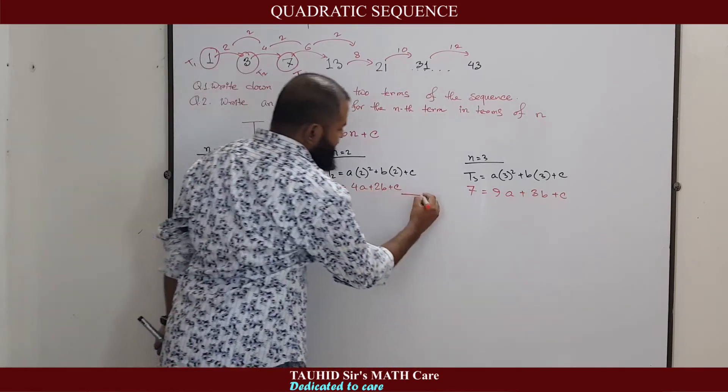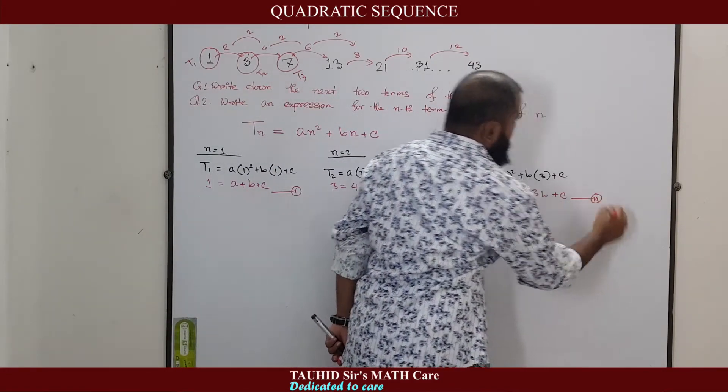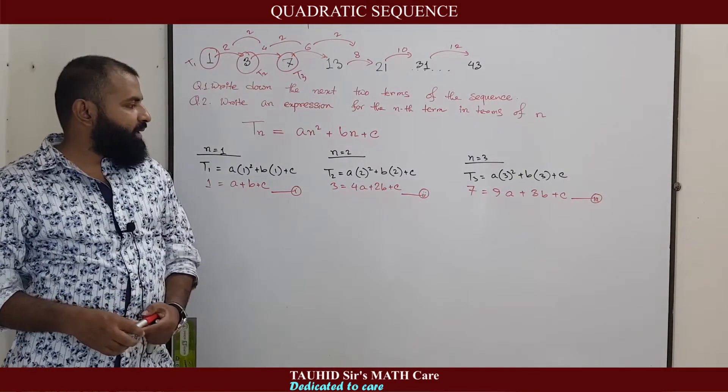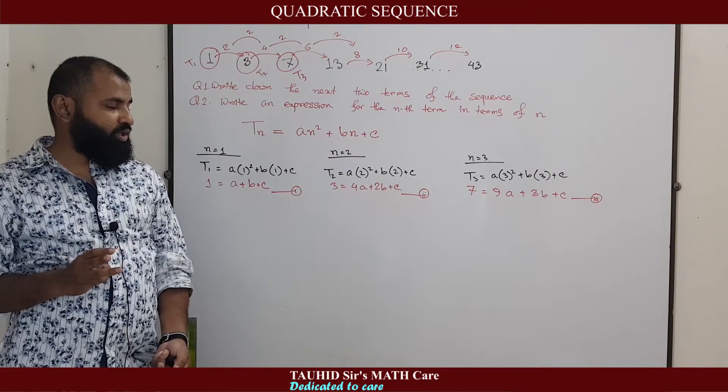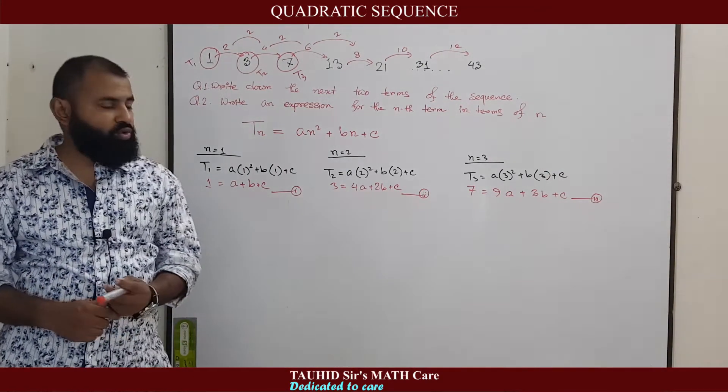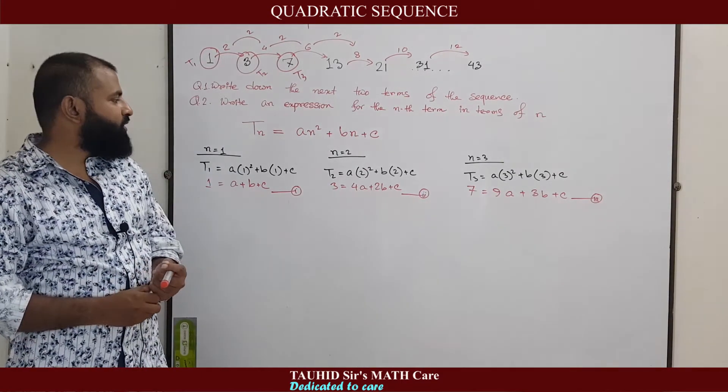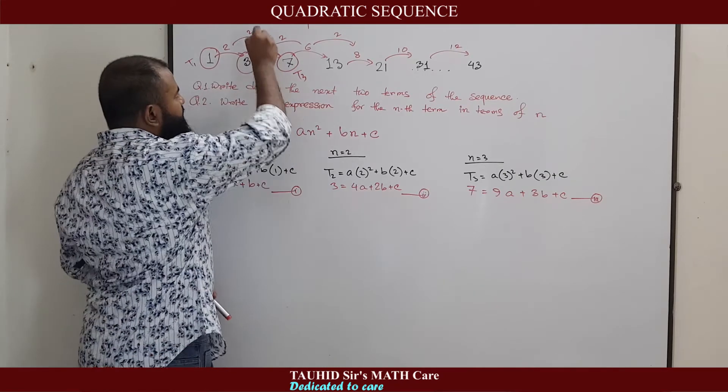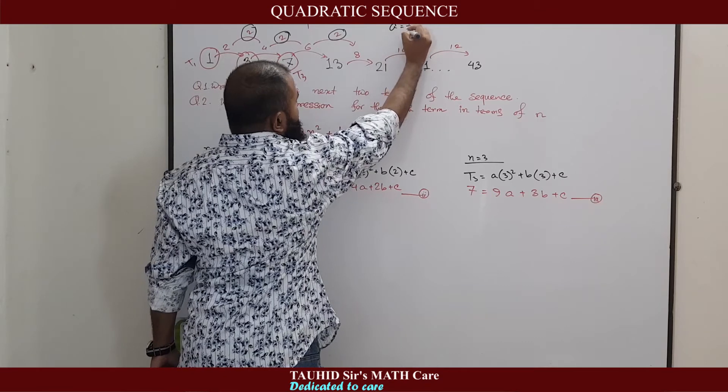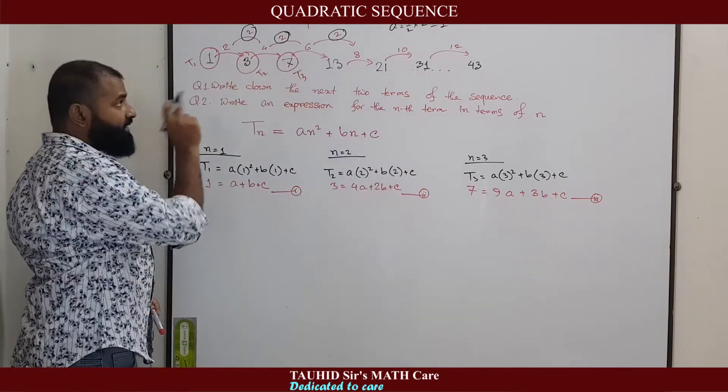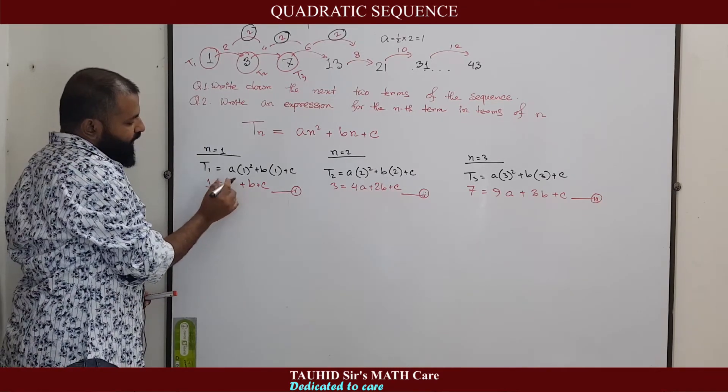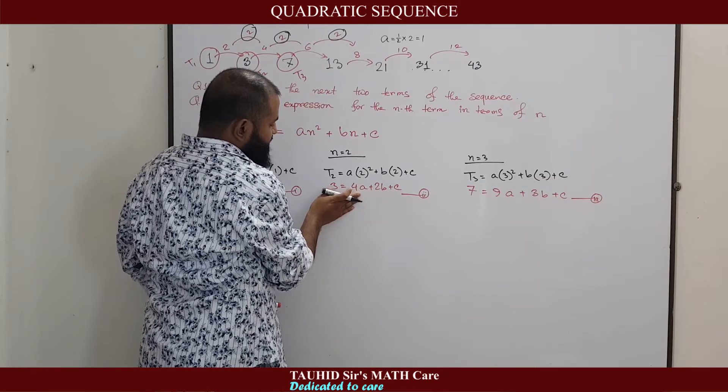If we solve these three equations, we will very easily find the value of A, B and C. Solving three equations with three unknowns is a very time-consuming task. So, we need to use some shortcut here. The shortcut is the value of A will be half of this value. A will be half of 2, that means 1. In this case, in case of quadratic sequence. Therefore, instead of A, we will write 1. So, our calculation will be much easier.